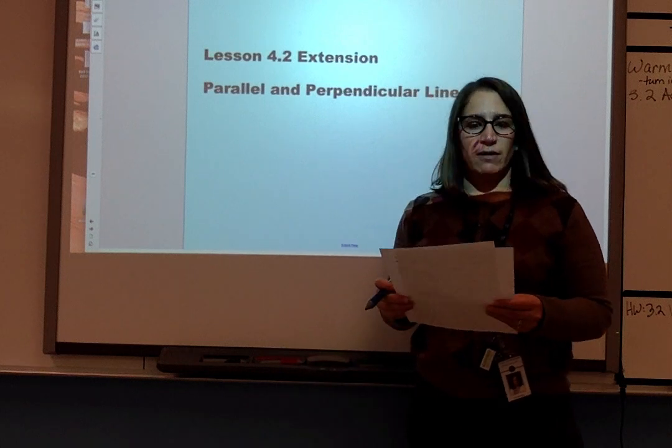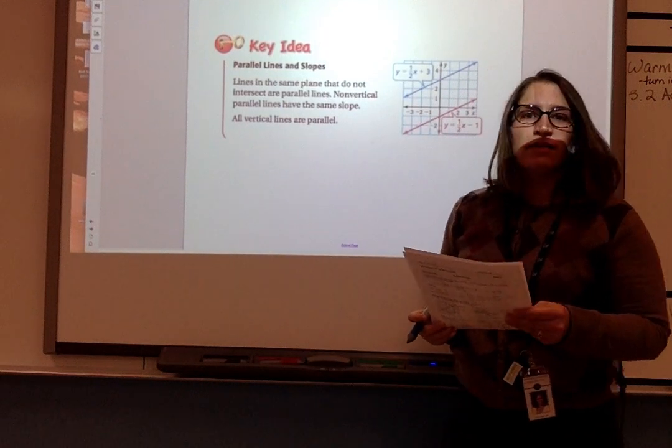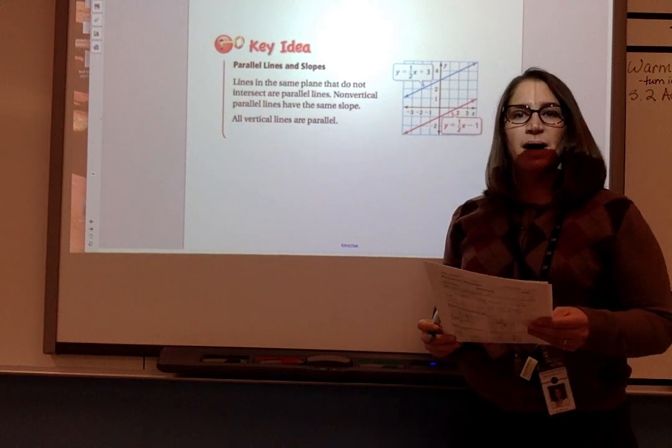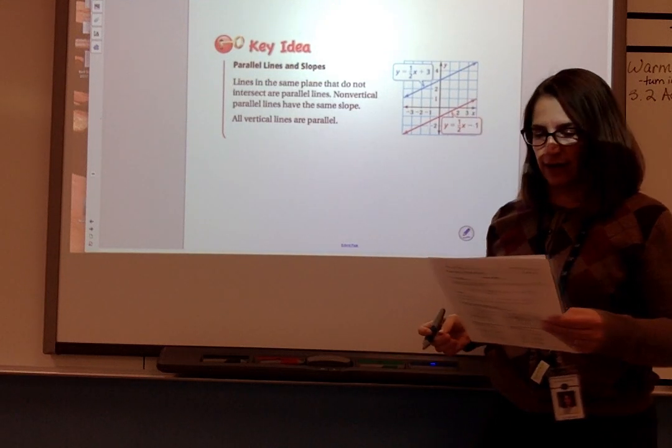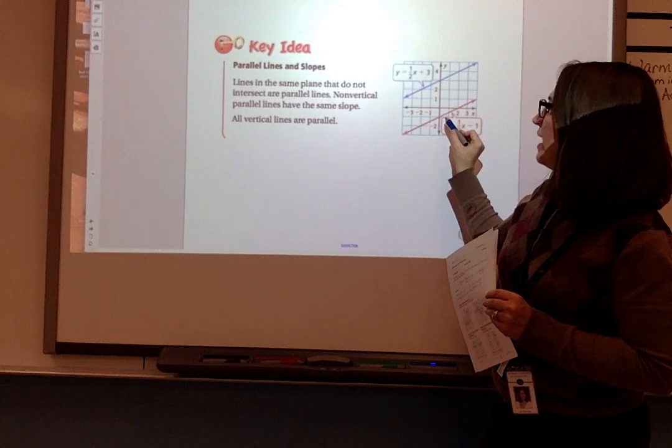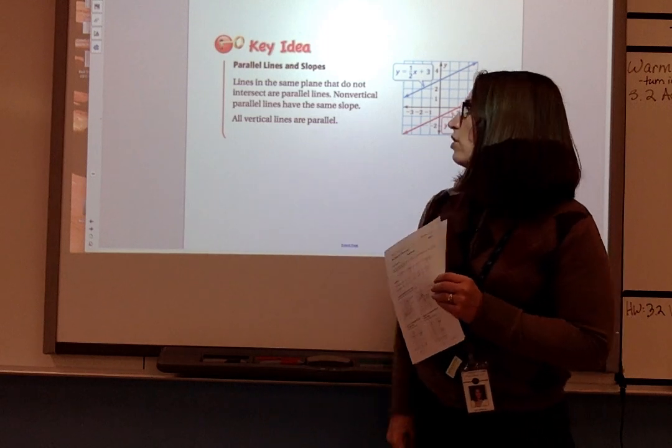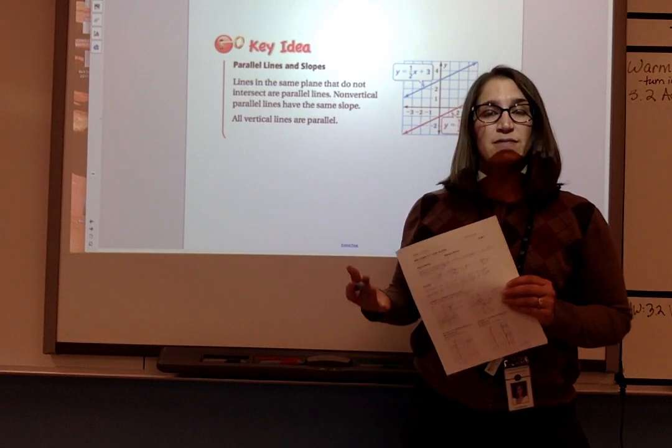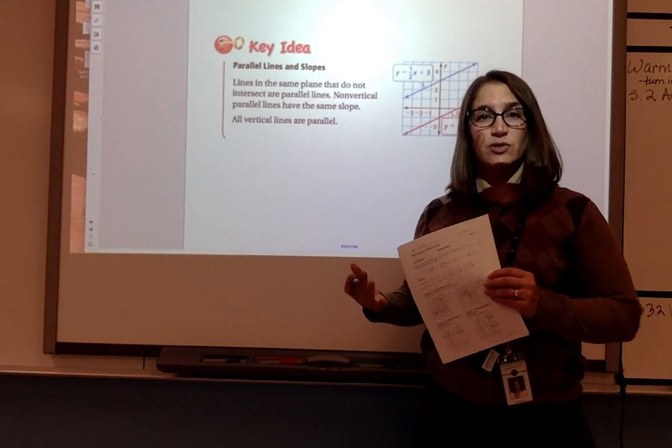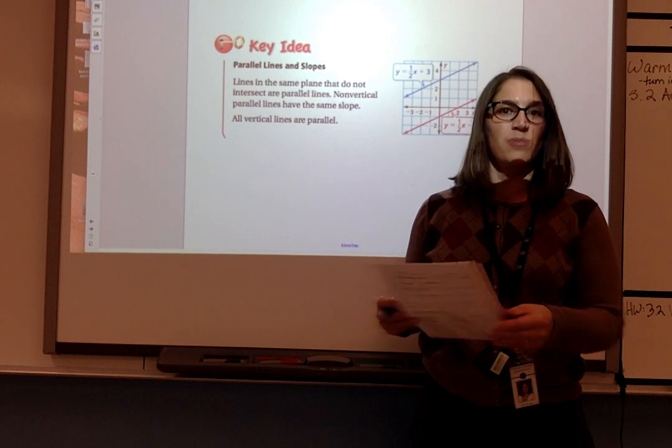Go ahead and look at the second page where you have parallel and perpendicular lines. Parallel lines are lines in the same plane that do not intersect. We already knew that. But we also know that non-vertical parallel lines have the same slope. So these two lines are not vertical. They both have a slope of one half, and they are parallel. So we can prove that lines are parallel by saying that they have the same slope. We're also told that all vertical lines are parallel. That's important because vertical lines don't have a slope. So if we're saying two lines are parallel if they have the same slope, we also need to clarify that vertical lines are parallel as well.